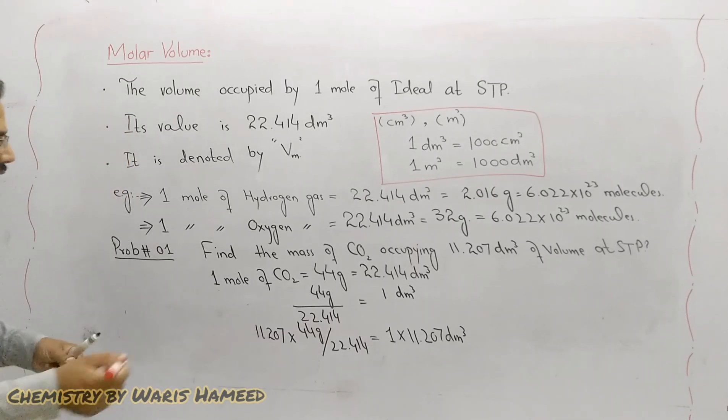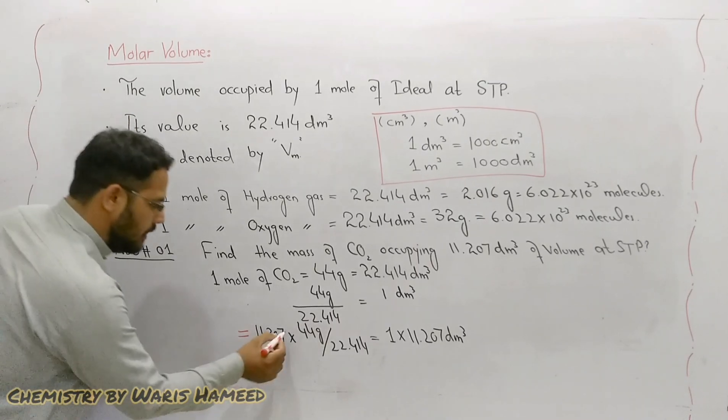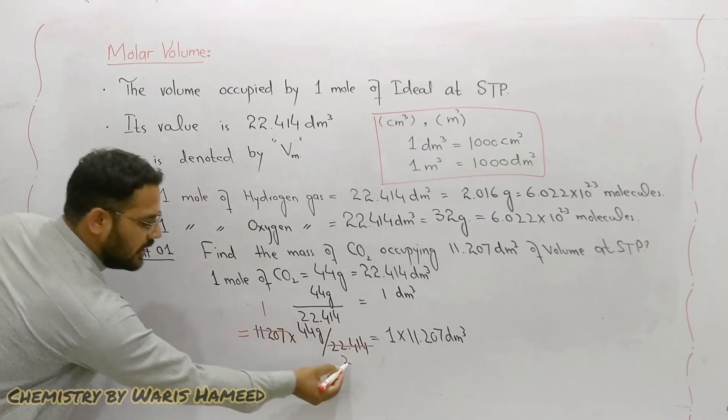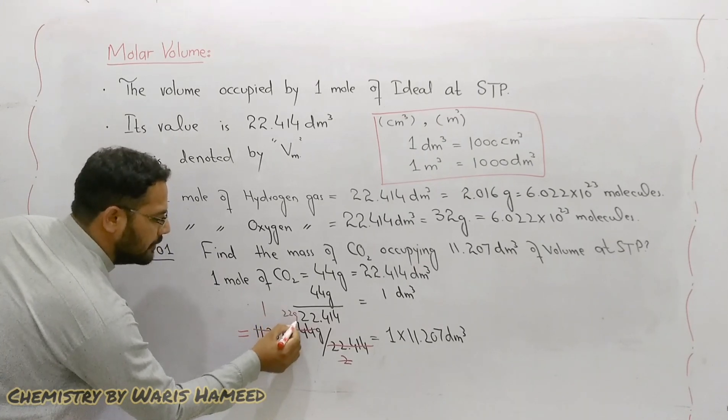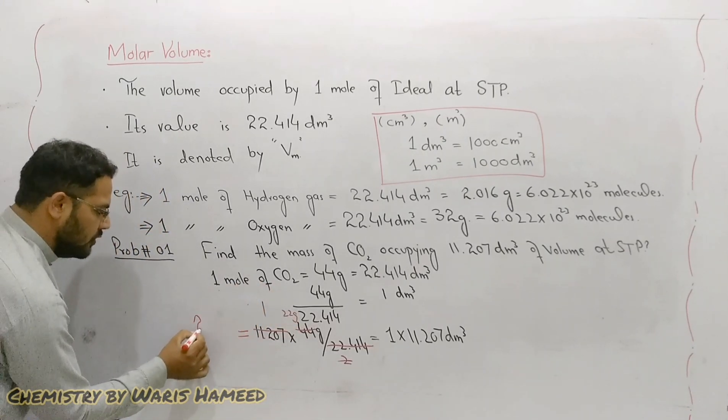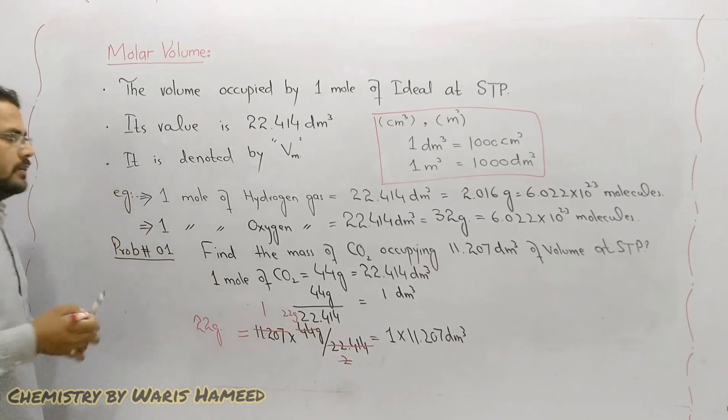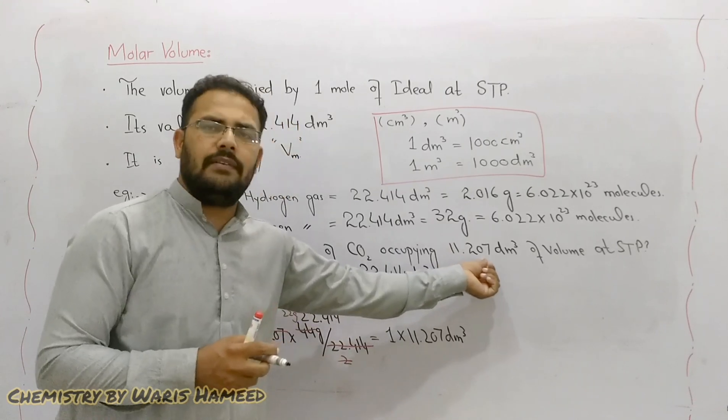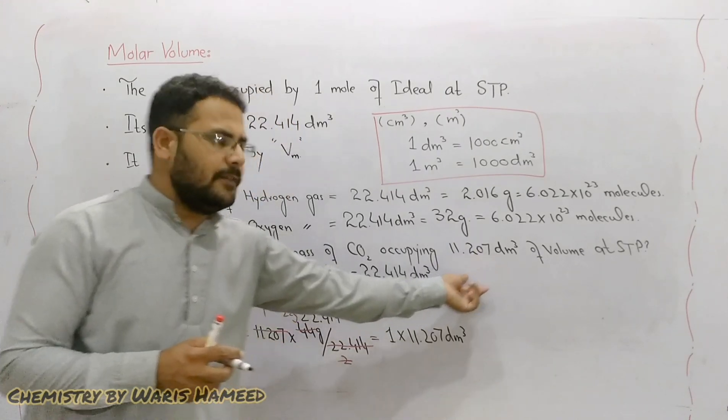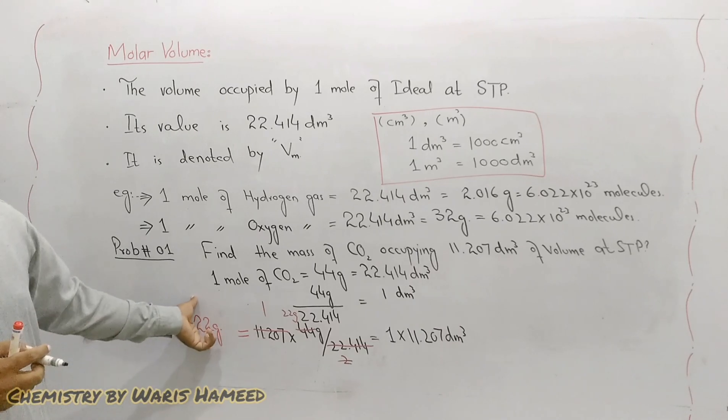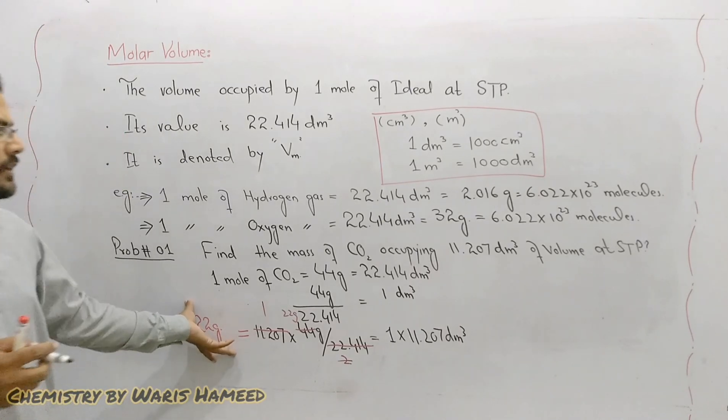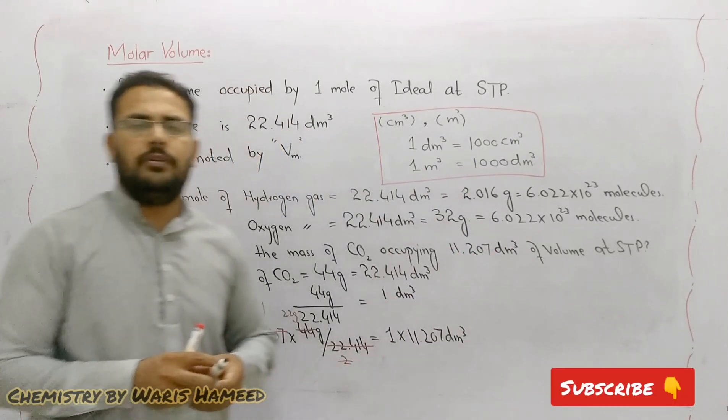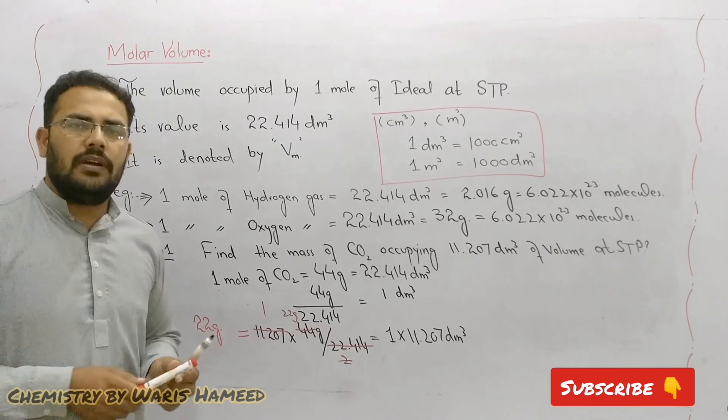Then we will obtain, after simplifying, 22 grams. So if we have carbon dioxide occupying 11.207 dm³ then the mass will be 22 grams. I hope that you have understood it completely.